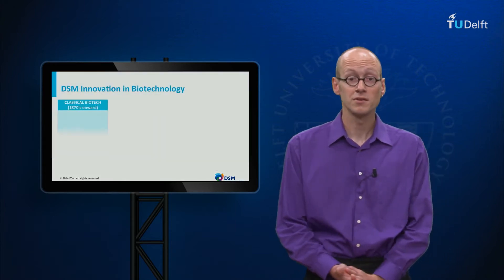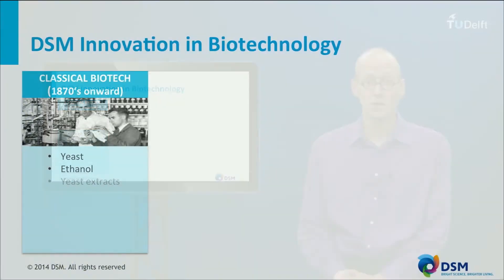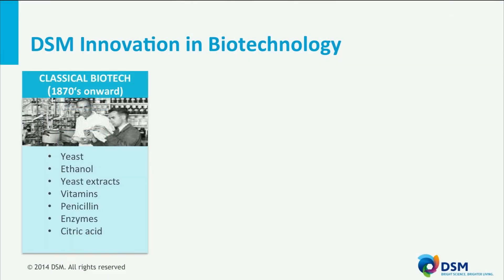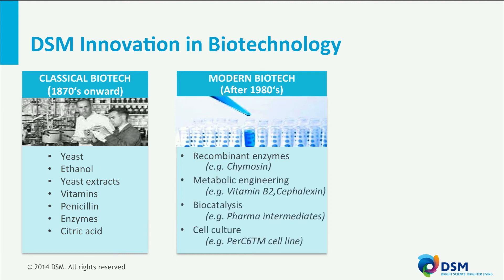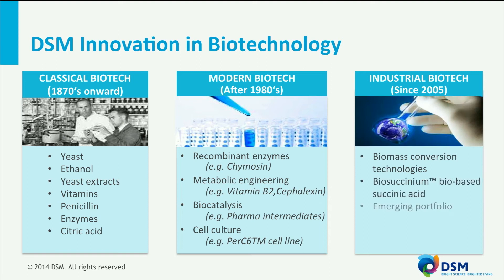DSM really has a long track record in biotechnology. It started basically around 1870 with the yeast and spirit plant in Delft for the production of yeast and alcohol. Since then more biotech related products have been developed and commercialized. The genetic tools developed since the 80s enabled us to use these for the development of our own products such as antibiotics, vitamins, etc. In the last decade, since 2005, DSM initiated a large program in the field of industrial biotech, related to the use of renewable feedstocks for the production of fuels and chemicals.